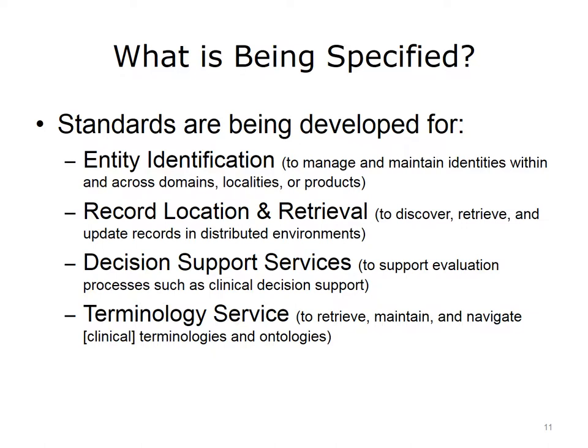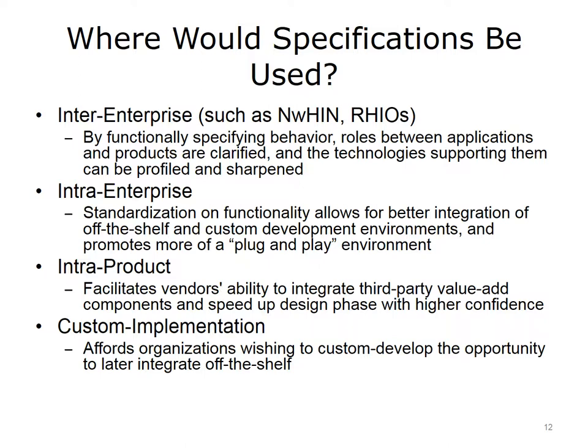These are some key standards that are an important part of obtaining global interoperability. We have previously discussed decision support services and terminology service. Standards are being developed for entity identification, to manage and maintain identities within and across domains, localities, or products. Record location and retrieval, to discover, retrieve, and update records in distributed environments. Decision support services, to support evaluation processes such as clinical decision support. And terminology service, to retrieve, maintain, and navigate clinical terminologies and ontologies. Entity identification is a necessity if we are to share data and resources. Both HL7 and IHE are creating standards and supporting material for these areas. Ambiguity in identifying the patient locally and regionally is particularly important.